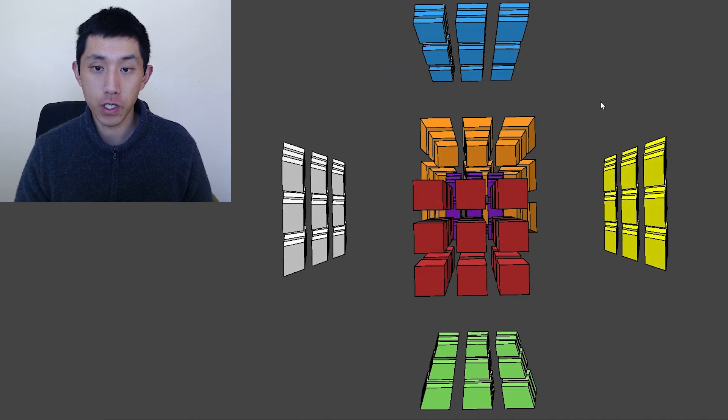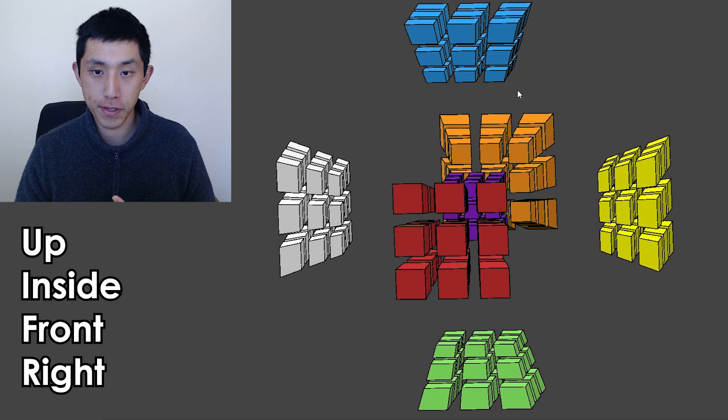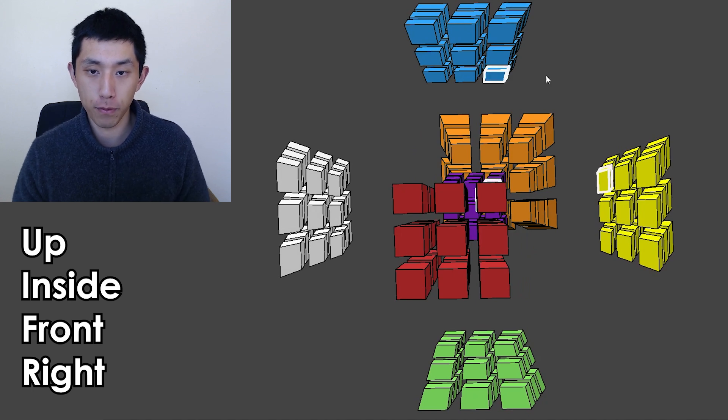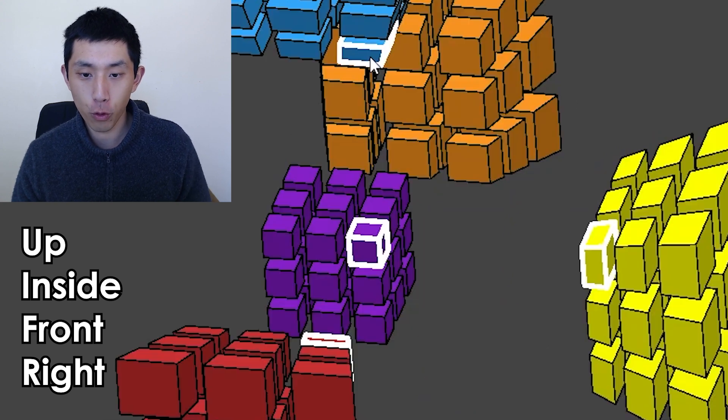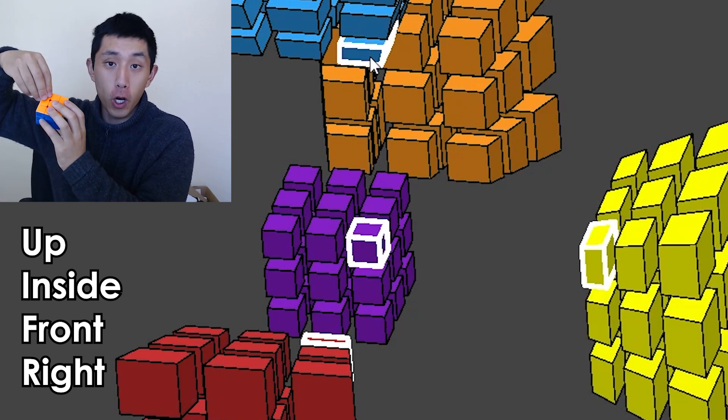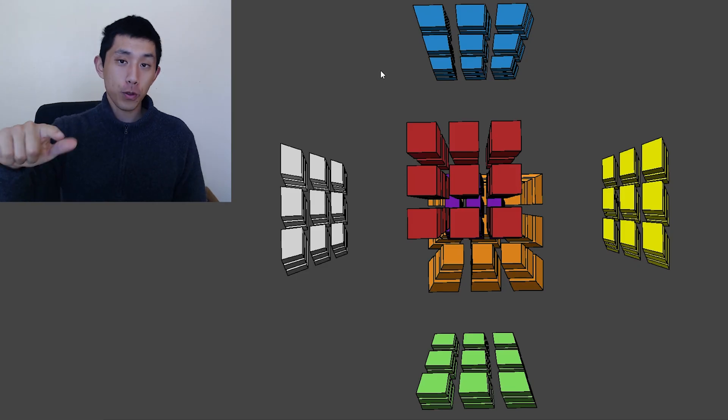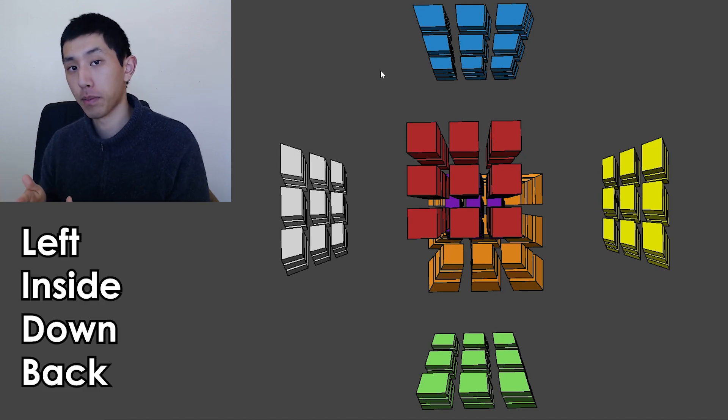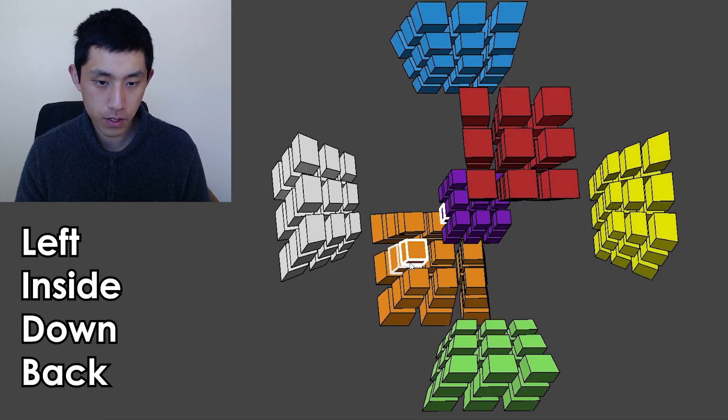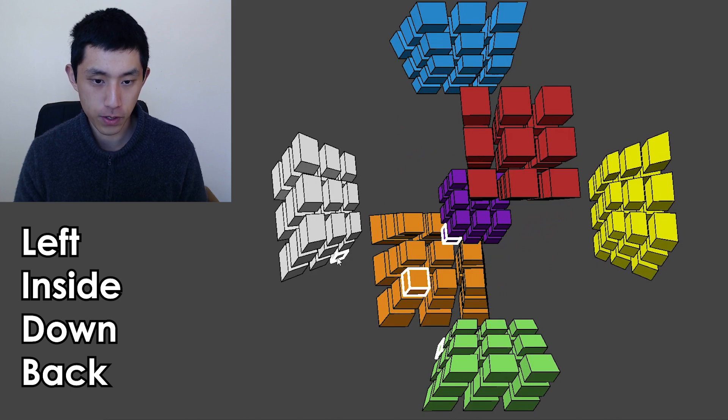Going back to four dimensions, if we talk about the same up inside front right sticker we were talking about before, you'll now see there are four stickers highlighted, because the corner pieces now have four colors on them. And once again, pause the video to try to find all the stickers that are attached to the left inside down back piece. And here it is, all the highlighted stickers here.